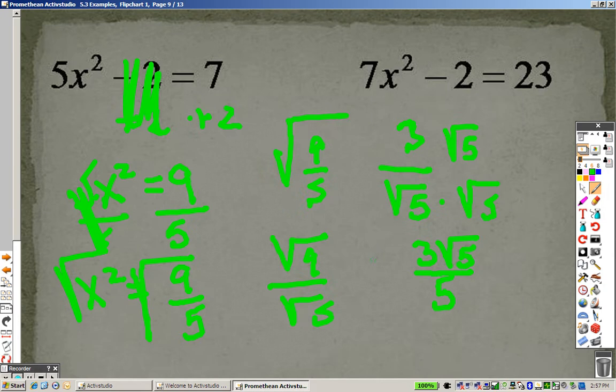So your official answer is 3 root 5 over 5, but because I'm solving for x, it's plus or minus. Remember, whenever you're square rooting something, you get 2 answers, plus or minus 3 root 5 over 5.